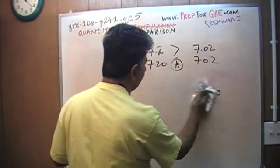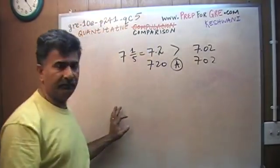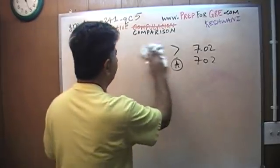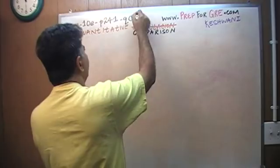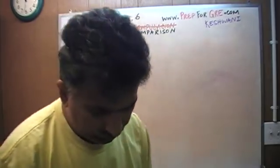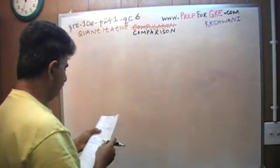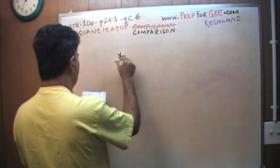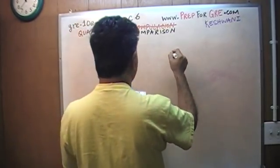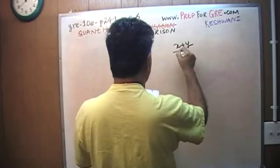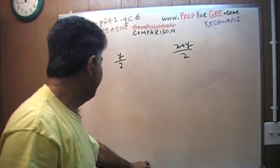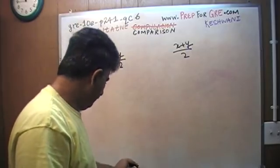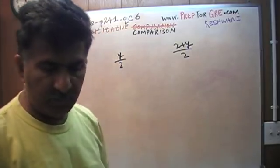That's all. I'm going to erase the thing, we're going to move on with our lives. Let's look at number 6. Number 6 says, y over 2 versus x plus y over 2.